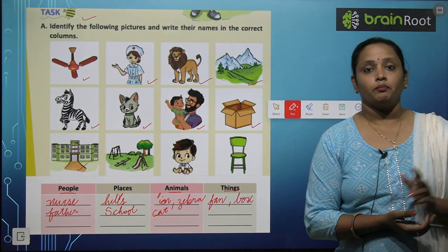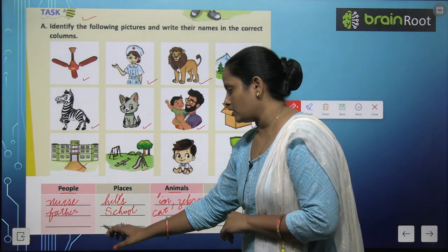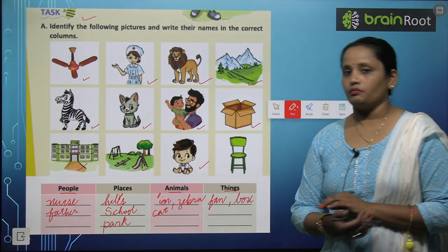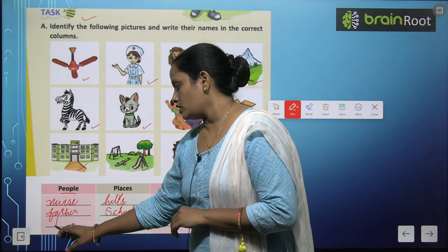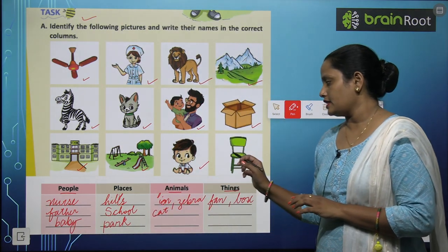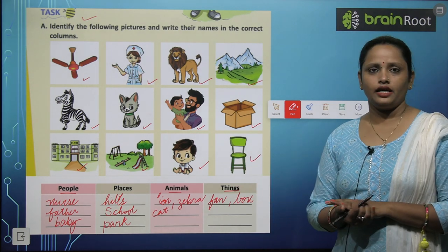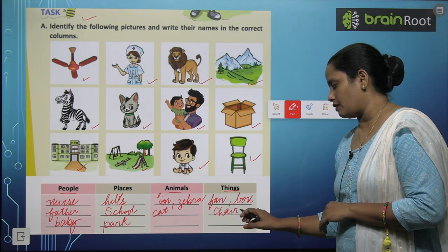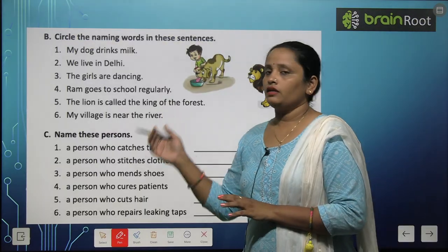Next is a park — jahan pe sab bachche shaam ko khelne jaate hain. Toh park bhi ek place hai. Next, baby. Baby kya hai? Ek person hai. And chair — toh chair ek thing hai. So jaldi se chair likh diya. I hope children, samajh mein aa gaya hoga aapko.